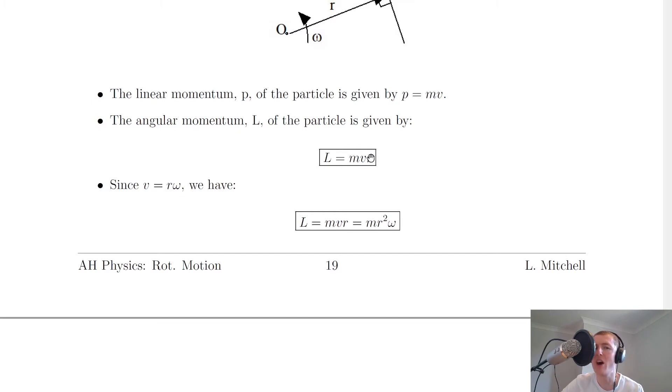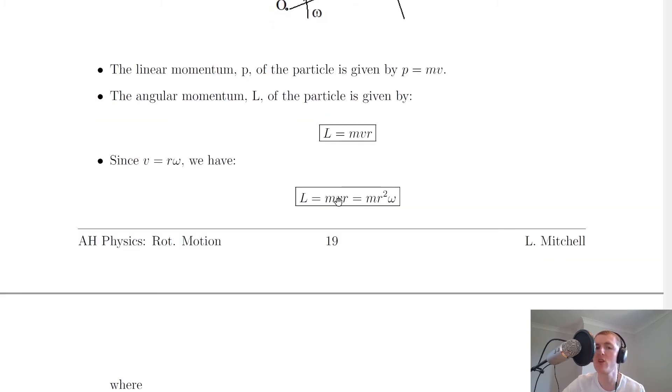So if we do that, we get the r squared from the r times r, and then we get omega left over. So we get mr squared omega. And so depending on whether a question gives you linear velocity or angular velocity, you can use either of these relationships. And this is given on the relationship sheet in the exam.